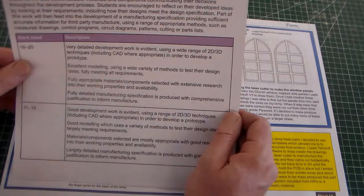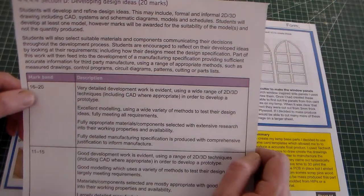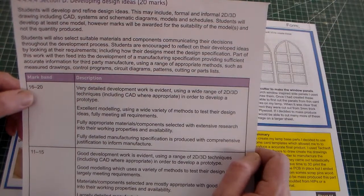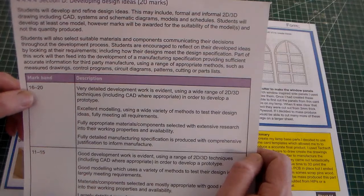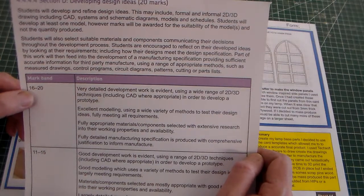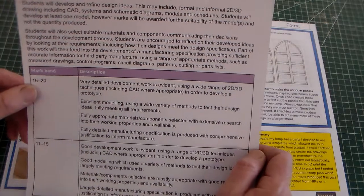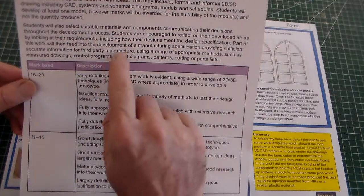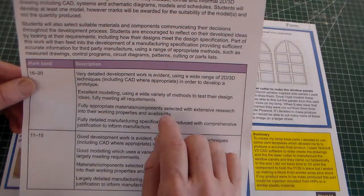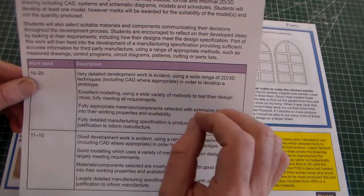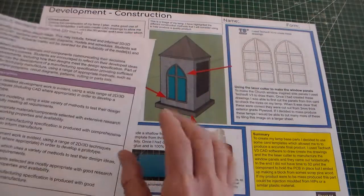If we look at our mark scheme here, it says students will develop and refine design ideas. This may include formal and informal 2D and 3D drawing, including CAD systems and schematic drawings. It also says that part of this work will feed into a development and manufacturing specification. These things include circuit diagrams, patterns, parts, templates, and cutting lists.